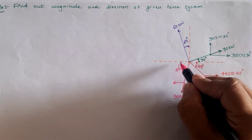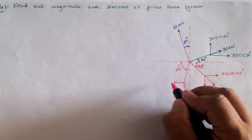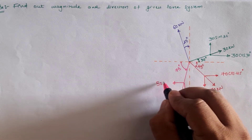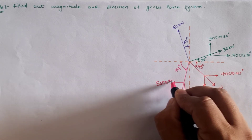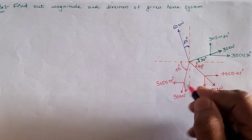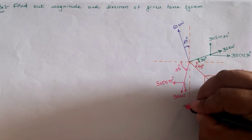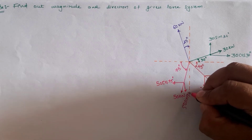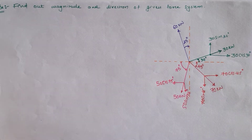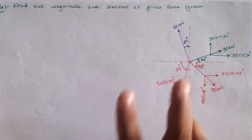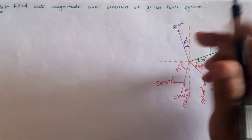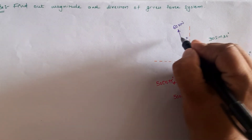Now focusing on the 50 kilonewton load: it makes an angle with the x-axis, so the horizontal resolution is 50 cos 75 and the vertical resolution is 50 sin 75. The vertical direction here is outward, and the last force is 60 kilonewtons.